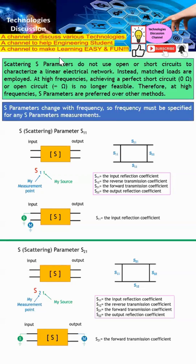Welcome to the Technologies Discussion Channel. In this video, I'm going to share what S-parameters are, why we use them, and how to better remember them. S-parameters, also known as scattering parameters, do not use open or short circuit conditions to characterize a linear electrical network. Instead, they use a matched load like 50 ohms, because at high frequency, achieving a perfect short circuit (zero ohms) or open circuit (infinite ohms) is not feasible. Therefore, at high frequency, S-parameters are preferred over other methods like Z-parameters and Y-parameters.